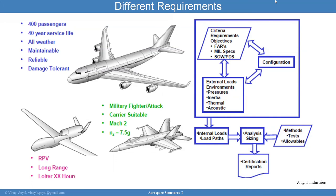You take that information, size your analysis, develop allowables, perform testing, and compare analysis to tests to validate your sizing. Once you have confidence in the analysis — with margins of safety, factors of safety, A-basis for single load paths, B-basis for redundant structures — and the highest expected loads, you develop certification reports. Note that aircraft design is specified differently from launch vehicles: launch vehicles use a 99/90 statistical basis for loads, while aircraft design is driven by federal aviation regulations.